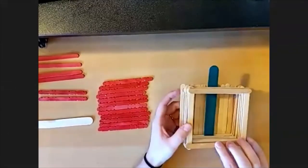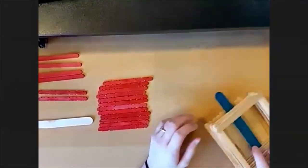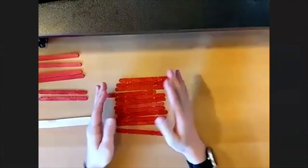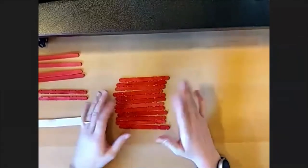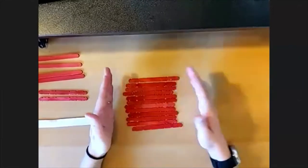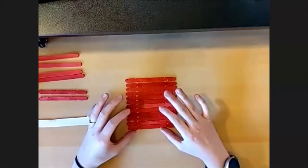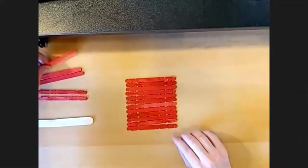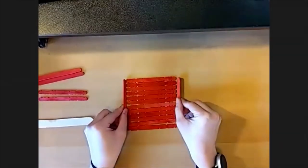All right, so this is what it'll look like when it's done. But to get started you're going to want 50 popsicle sticks total, but just to start you're going to need 12. I've arranged them all in a line like this. I'm going to use some extra popsicle sticks to make sure my line is straight.